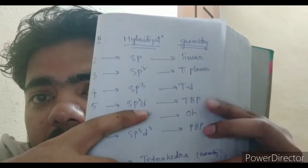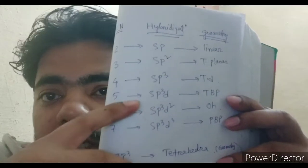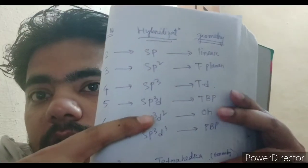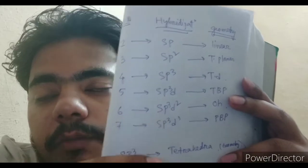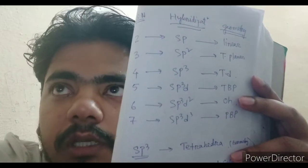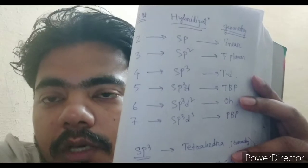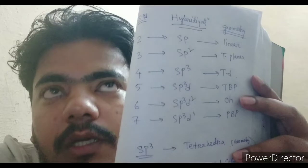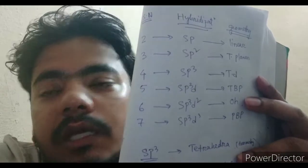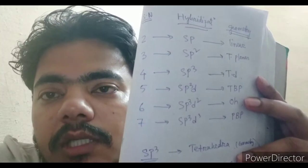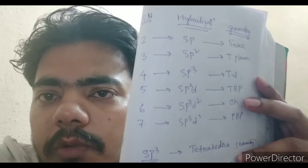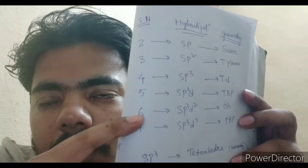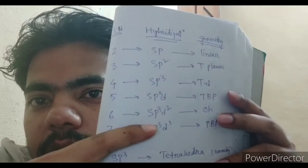If any lone pair is present in sp3d hybridization with trigonal bipyramidal geometry, the shape changes. With one lone pair, the shape is seesaw. With two lone pairs, the shape is T-shaped. With three lone pairs and two sigma bonds, the shape is linear.